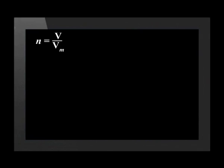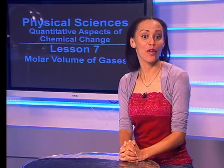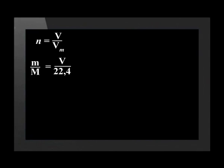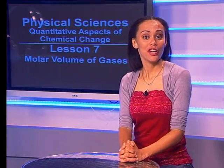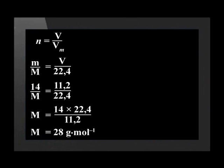We write down our standard formula for the relationship between the number of moles, volume and molar volume. We want to calculate the molar mass. We can substitute the number of moles with the equation mass over molar mass. We can also substitute the value of the molar volume at STP which is 22.4. The mass of the gas is 14 grams and the volume is 11.2 decimetres cubed. Now, we need to change the formula around so that the molar mass is the subject of the formula. We then find that the molar mass is 14 times 22.4 divided by 11.2. And we get an answer of 28 grams per mole.